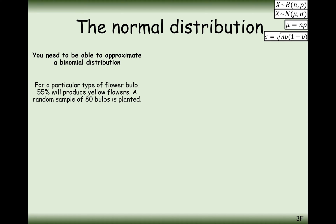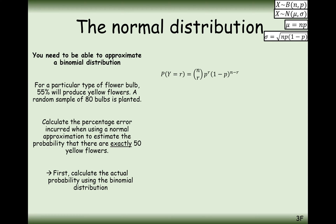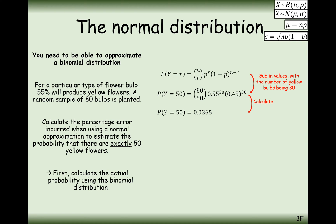Next question: 55% of a particular type of bulb will produce yellow flowers. A random sample of 80 bulbs are planted. Calculate the percentage error when using a normal distribution to estimate the probability that exactly 50 produce yellow flowers. First, calculate using the binomial formula: 80 choose 50, times 0.55 to the power 50, times 0.45 to the power 30, giving 0.0365. Record the full decimal value.